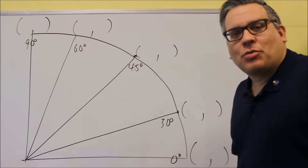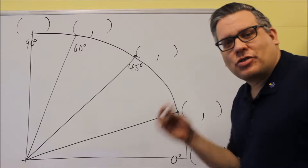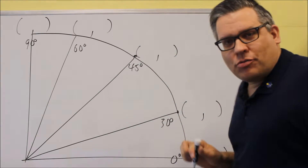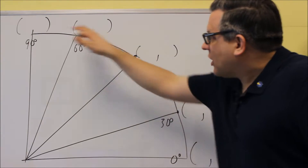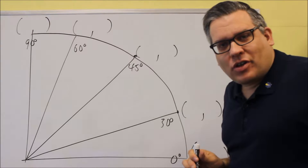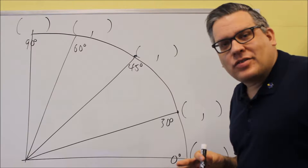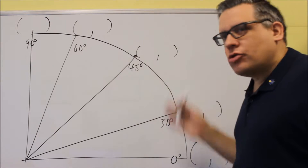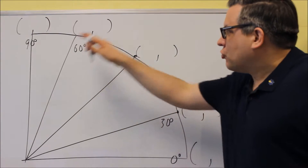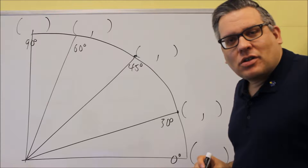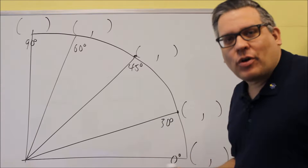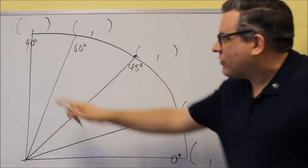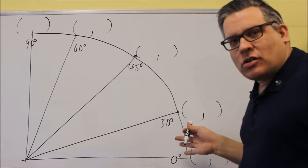We've already looked at a table of values from those special triangles, so now we're moving on to actually getting the values on the unit circle itself. Instead of having to memorize the entire table or unit circle, I'm going to show you a way to draw this using patterns, so you don't have to actually remember anything. You do have to start with this drawing.